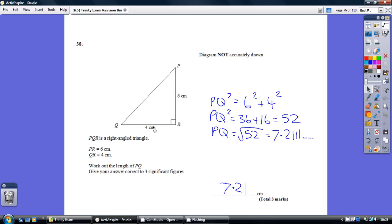Remember, what Pythagoras says is the square of the two shorter sides equals the square of the hypotenuse. So here, PQ squared is 6 squared plus 4 squared. Remember, 6 squared means 6 times 6, 4 squared means 4 times 4. Add those together and that's 52. So PQ squared is 52.